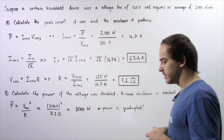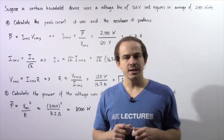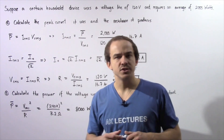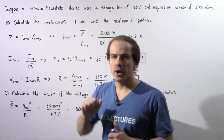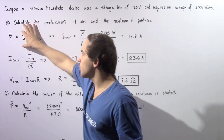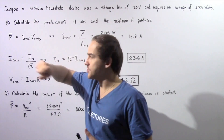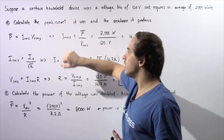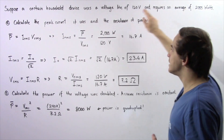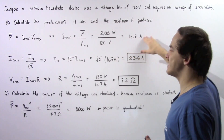Let's begin by calculating the peak current. To find the peak current, we first need the root mean square current. The average power equals the product of the RMS current and the RMS voltage. Since we know both the RMS voltage and the average power, we rearrange to solve for IRMS: 2000 watts divided by 120 volts gives us about 16.7 amps.